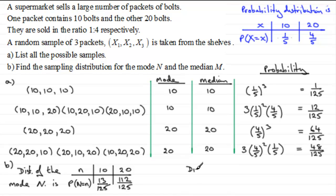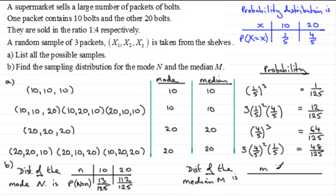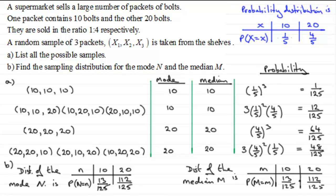For the sampling distribution of the median M, M can take values 10 or 20. The probabilities are exactly the same: P(M = 10) = 13/125 and P(M = 20) = 112/125. This is quite common in these types of questions. I hope this gives you a useful model for similar examples.